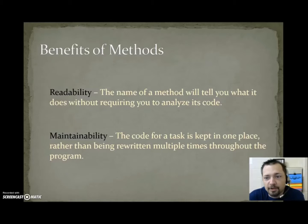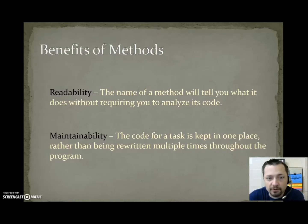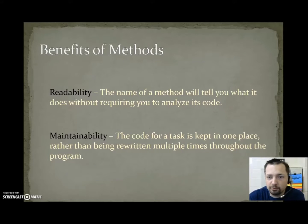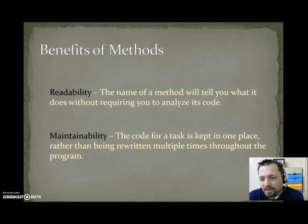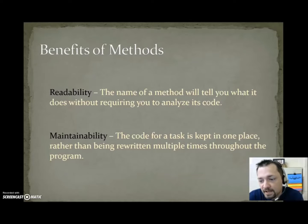Readability. The name of a method will tell you what it does without requiring you to analyze its code. So a method is a group of code — it may have 20 lines or maybe 100 lines to calculate the shortest path in a maze. But if the method is named solveMaze or shortestPath, then just by reading the name of the method, you understand what it does. An example of that would be when we call math.sqrt() and pass it a value — we're actually calling the square root method. We don't really know how it's calculating the square root, but all we have to know is that math.sqrt is going to do the square root. We don't have to know what the code inside square root is.